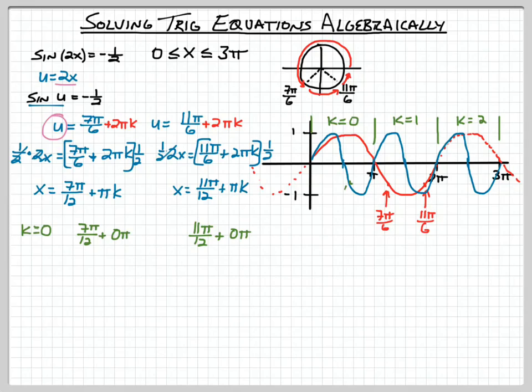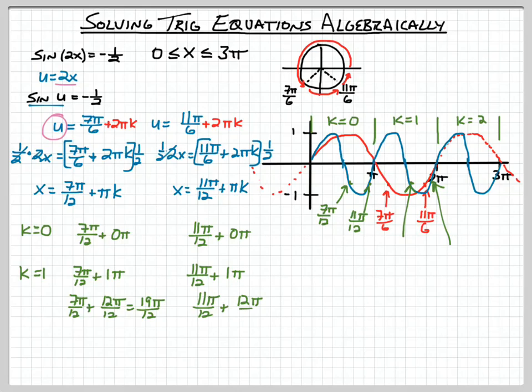What about k equals 1? k equals 1 is 7π/12 plus 1π, 11π/12 plus 1π. And that's going to be these two points here in the second interval and we can solve for what this is going to be by changing our π into an equivalent fraction getting 19π/12. Again changing π to an equivalent fraction 12/12 and we get 23π/12. So that's what these two values are here in our second interval or k equals 1.